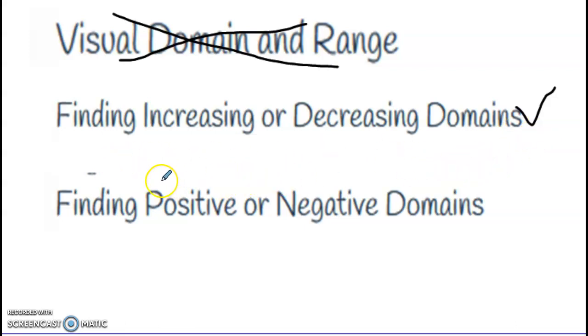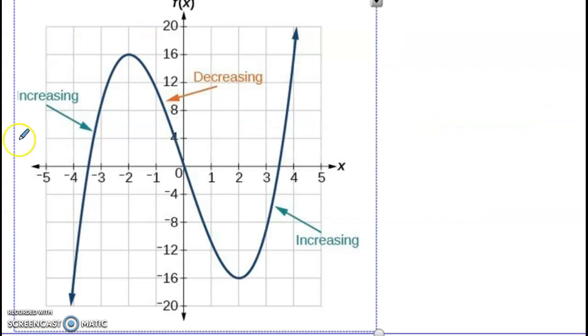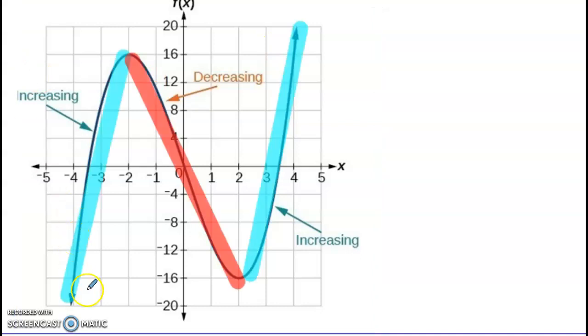What we want to know is based on whether it's increasing or decreasing. So let's take a look at that. Here you have a function with a spot where it's increasing, then decreasing, and then increasing. What we want to do is find interval notation of where it's either increasing or decreasing based on what the question is asking.